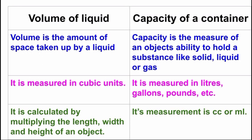Volume of liquid is measured in cubic units. At the same time, the capacity of a container is measured in liters, gallons, pounds, etc. Volume of liquid is calculated by multiplying the length, width, and height of an object.